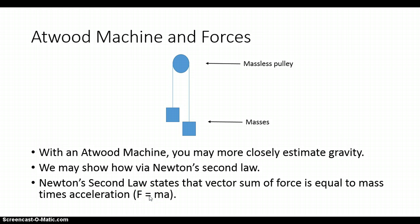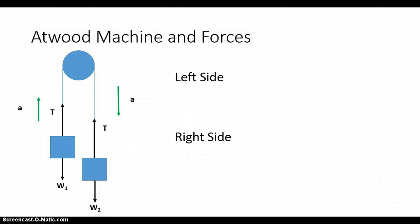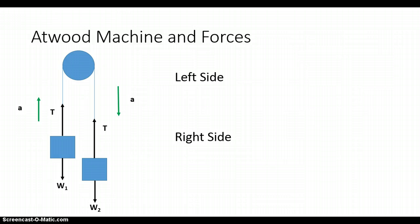Now that we have the idea as to what composes an Atwood machine and we know that we are using Newton's second law, let's analyze a situation in which we have two sets of masses where they're unbalanced — where they're not equal to each other. Because they're not equal, one mass will end up moving upward and one mass will end up going downward. The mass going upward has an acceleration in the positive y direction, and the mass going downward has an acceleration in the negative y direction.